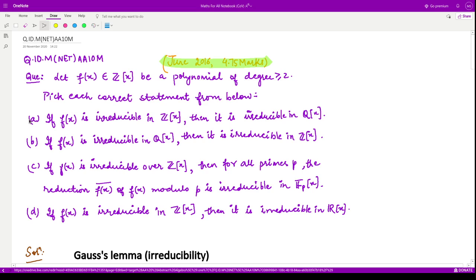They are asking if f is irreducible in Z[x], then it is irreducible in Q[x] as well. The second option is if f is irreducible in Q[x], then it is irreducible in Z[x]. So let us first see these two options.